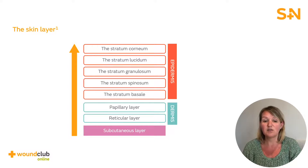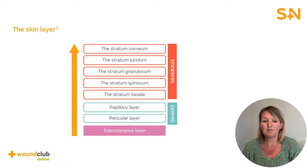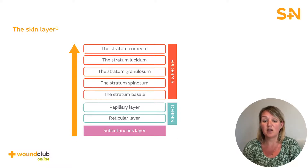The stratum lucidum is a layer found in areas such as the palms of the hands and soles of the feet, and provides some degree of waterproofing to the skin. The stratum corneum is the outermost layer and consists of 25 to 30 layers of flattened dead keratinocytes. The cells contain keratin, a protein which helps protect the skin and underlying tissues from microorganisms, chemicals, and heat.